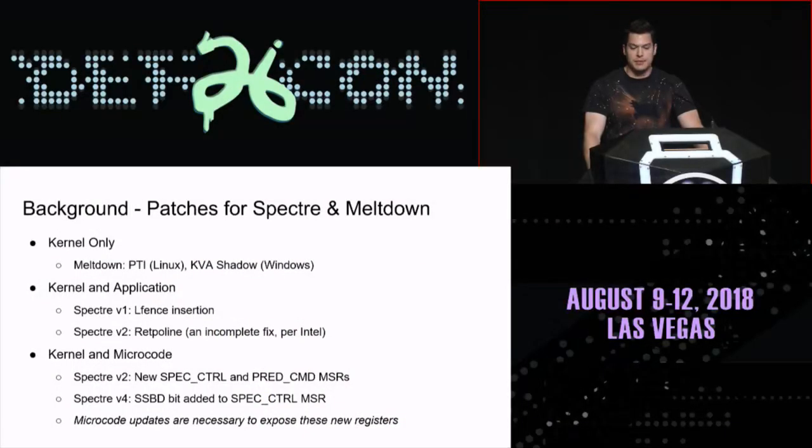But some of the other variations — Spectre V2 if you don't trust the retpoline fix, and V4 — required microcode changes. This means you have to actually go patch the CPU firmware in order for the software fixes to take effect. So you have to do two things: get the kernel patches to use the new microcode, and actually update the processor firmware so that the new capabilities are exposed to the OS to protect you from these bugs.